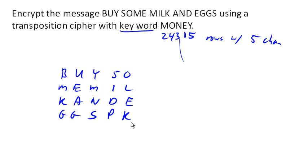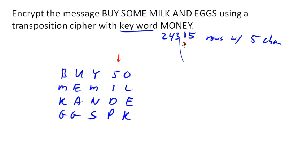To write down our encrypted message, we're going to use the keyword as the key for what order to write the columns down in. This says to first write down the fourth column in the message. So first I'm going to write S, I, D, P. Then the second column is this one, because the keyword is telling me the order in which to read them.